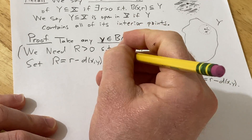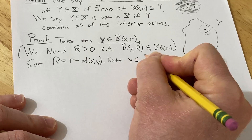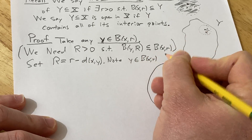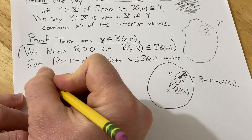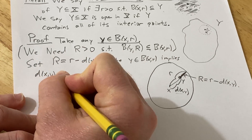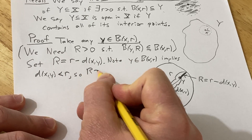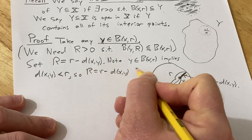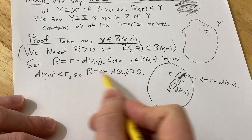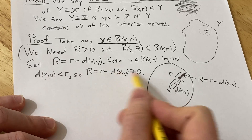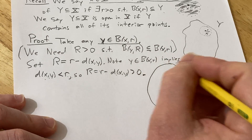We should note that R is positive. Since y is in B(x,r), that means d(x,y) is less than r. So R equals r minus d(x,y) is positive — because you're subtracting d(x,y) from both sides and getting r minus d(x,y) greater than zero. So R is a legitimate positive radius that we can work with.